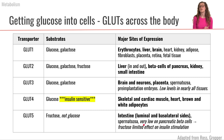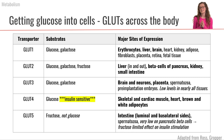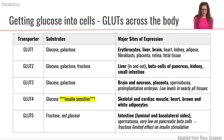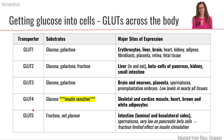Overall, the moral of the story is that we have a whole array of different kinds of GLUTs that allow us to take in glucose from the blood into different types of body cells. And GLUT4 is the insulin-sensitive glucose transporter.